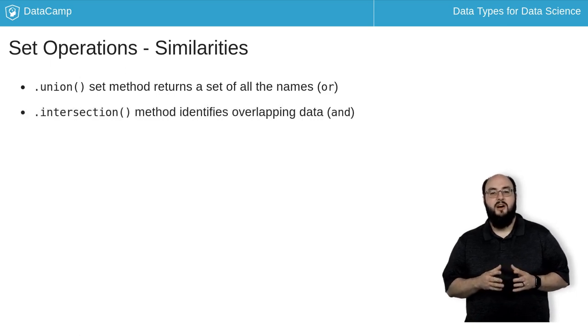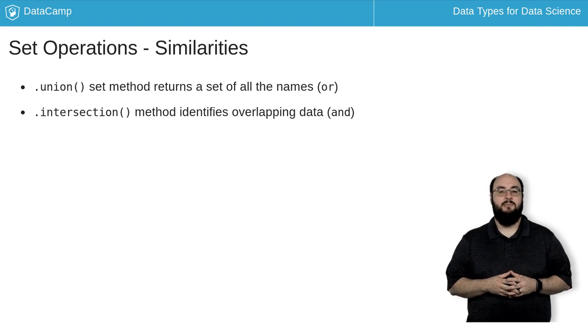The intersection method also accepts a set and returns the overlapping elements found in both sets. This is great for comparing data year over year, for example.